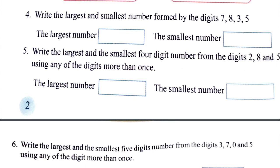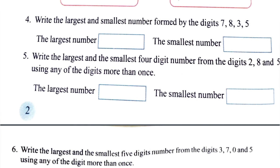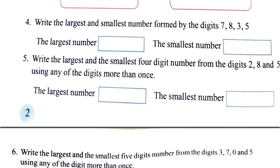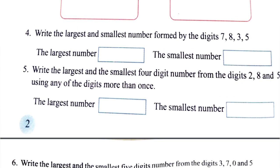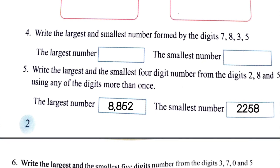Using any of the digits more than once, we have 4-digit numbers with 2, 8, and 5. The largest number is 8,852. This is 2,258.